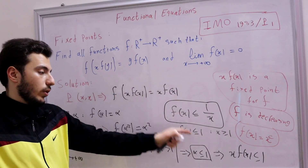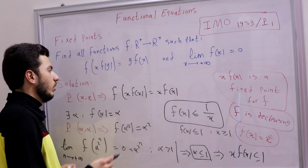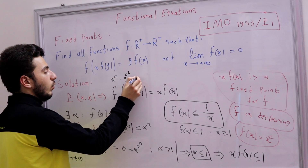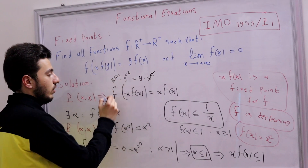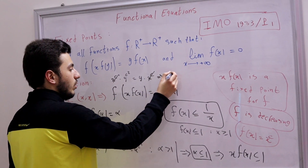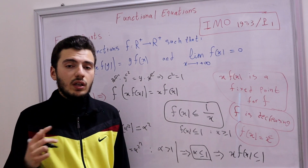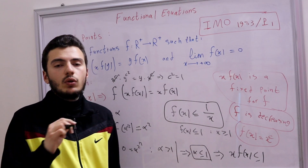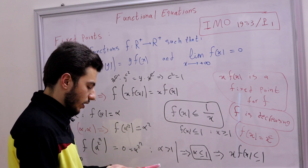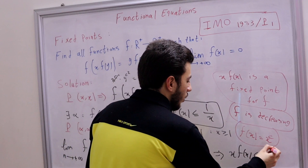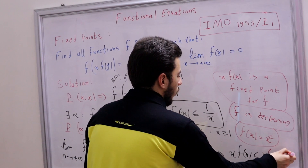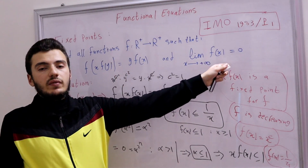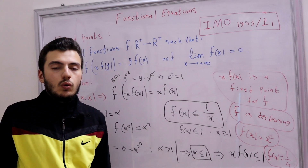Now we find c. Substituting f(x) = x^c back into the original equation: x^c · (y^c)^c = y · x^c, so x^c · y^(c²) = y · x^c. This gives c² = 1, so c = 1 or c = −1. Since f is decreasing, c must be negative, so c = −1, meaning f(x) = 1/x. This is the unique solution, and it satisfies the limit condition since 1/x → 0 as x → +∞.